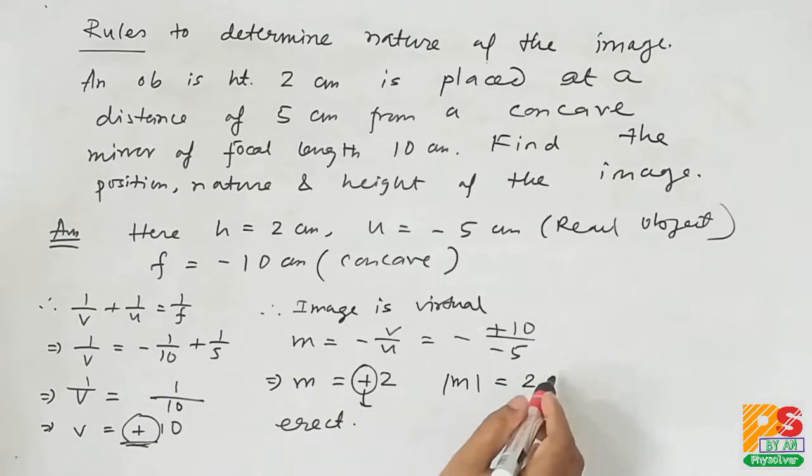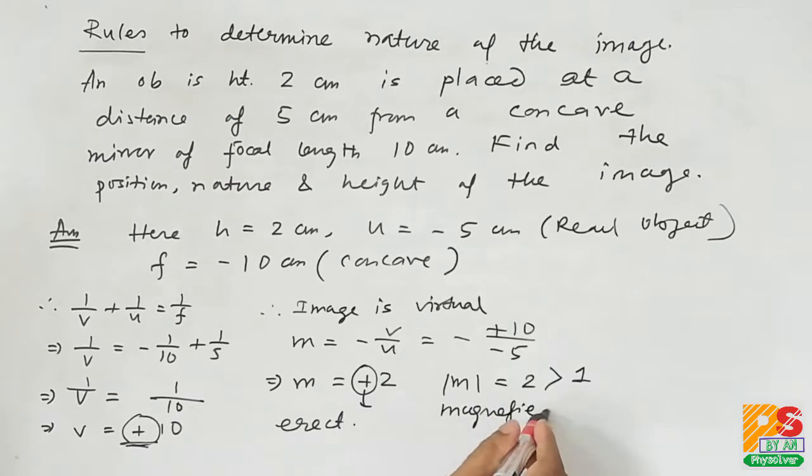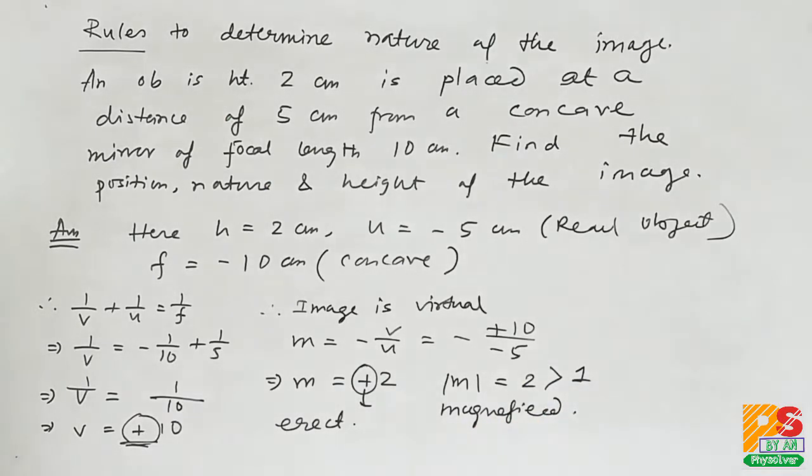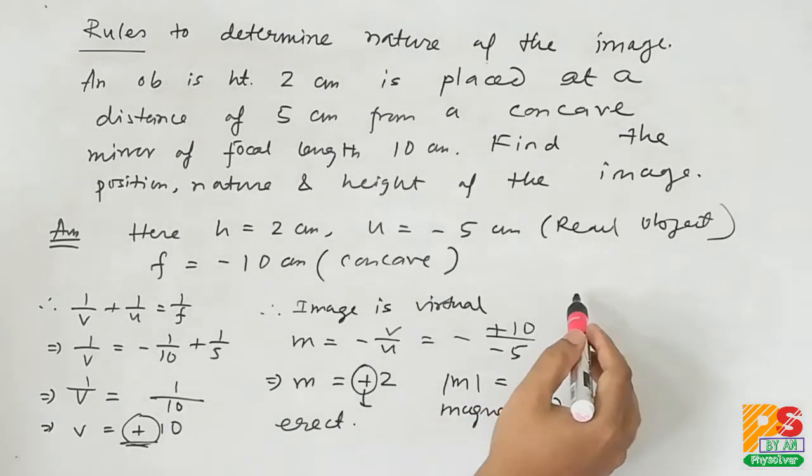Now mod m is 2 which is greater than 1. It means that the image is magnified. Therefore for nature we get that the image is virtual, erect and magnified.